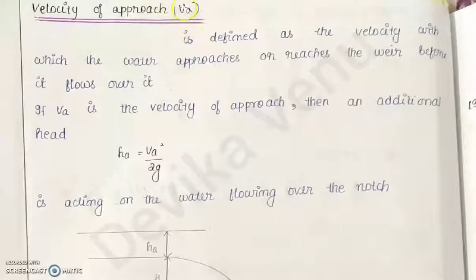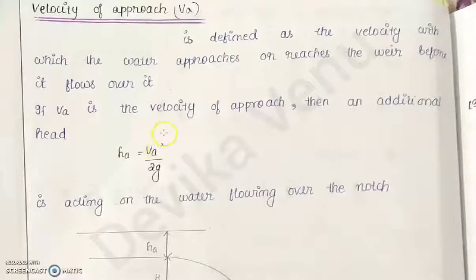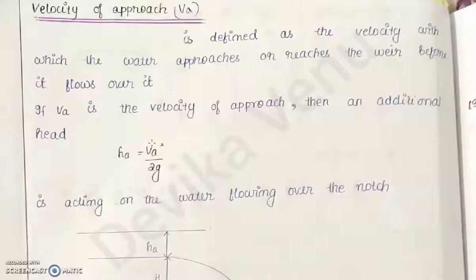Due to this velocity of approach there is an additional head, that is VA²/2g. You know there is a velocity and there will be a kinetic head. So HA = VA²/2g — that is the head due to velocity of approach. Before, when we found out the discharge, we had not considered any VA²/2g term or head due to velocity of approach.